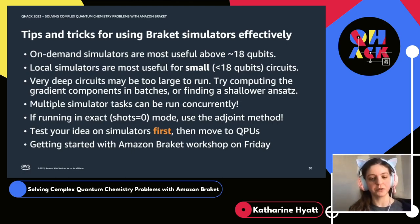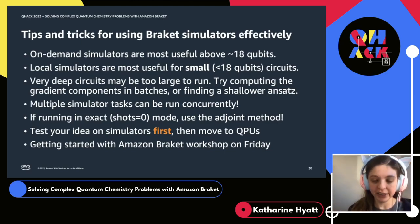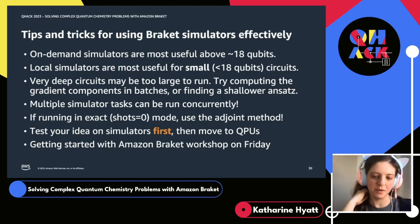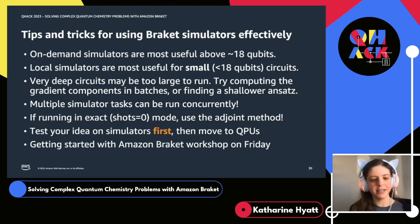Similarly, if you're running in exact mode — i.e., shots equals zero — for example for initial hyperparameter optimization or to try and refine your ansatz, we strongly recommend that you use the adjoint method. This can take your workflow from completely infeasible on large qubit counts — like 20-plus — to able to run in less than 20 minutes. We'll post the documentation about how to do this, and please feel free to reach out if you're running into trouble. Overall, keeping with the philosophy that Vanessa is going to discuss on Friday of build, test, run on Amazon Braket, our strong recommendation is that you try your idea on simulators first and then move to the quantum processing units.